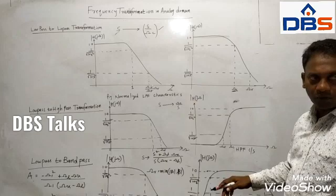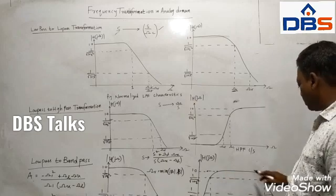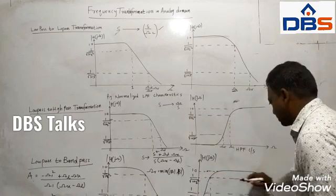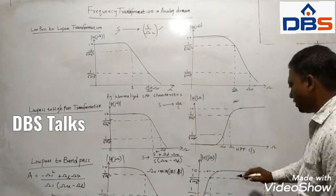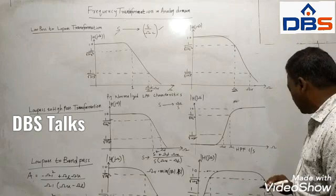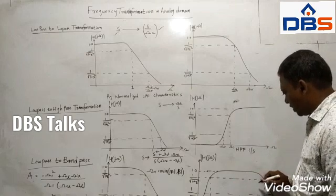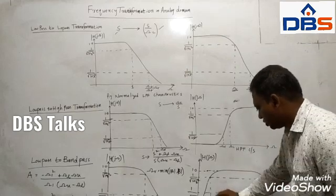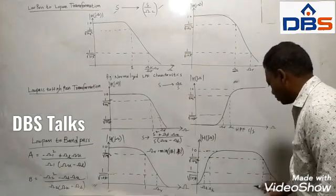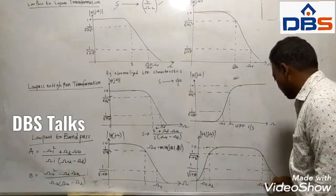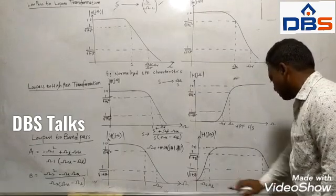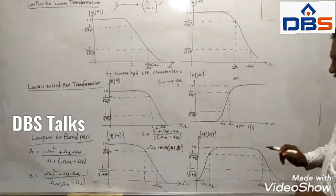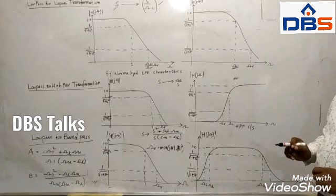In the band-pass filter plot, the level 1 divided by root(1 plus epsilon squared) and 1 divided by root(1 plus lambda squared) are drawn as horizontal lines. Wherever these lines intersect the magnitude plot, they give you omega_L and omega_U — the lower and upper cutoff frequencies — and omega_1 and omega_2. Omega_1 and omega_2 correspond to the stopband, whereas omega_L and omega_U correspond to the passband parameters.